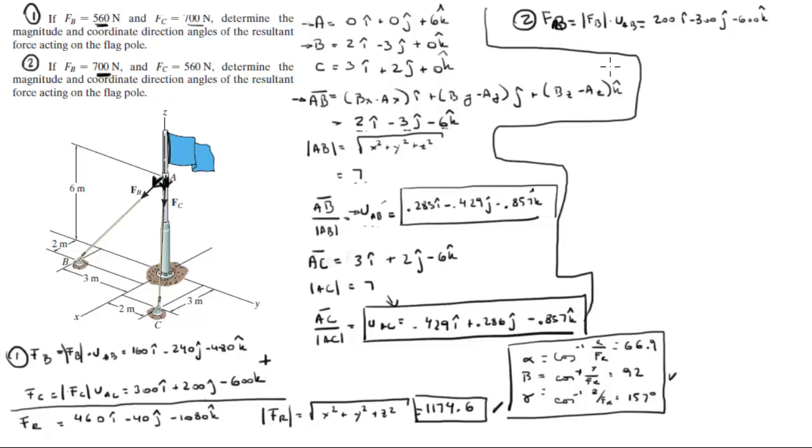Same thing with F of C. You multiply the magnitude, which is given, and this time is 560 instead of 700, times the unit vector AC. And it comes out to be 240 plus 160, so this is 240i, 160j minus 480k. The resultant force is the two forces added together. And the two forces added together are 440i minus 140j minus 1080k.